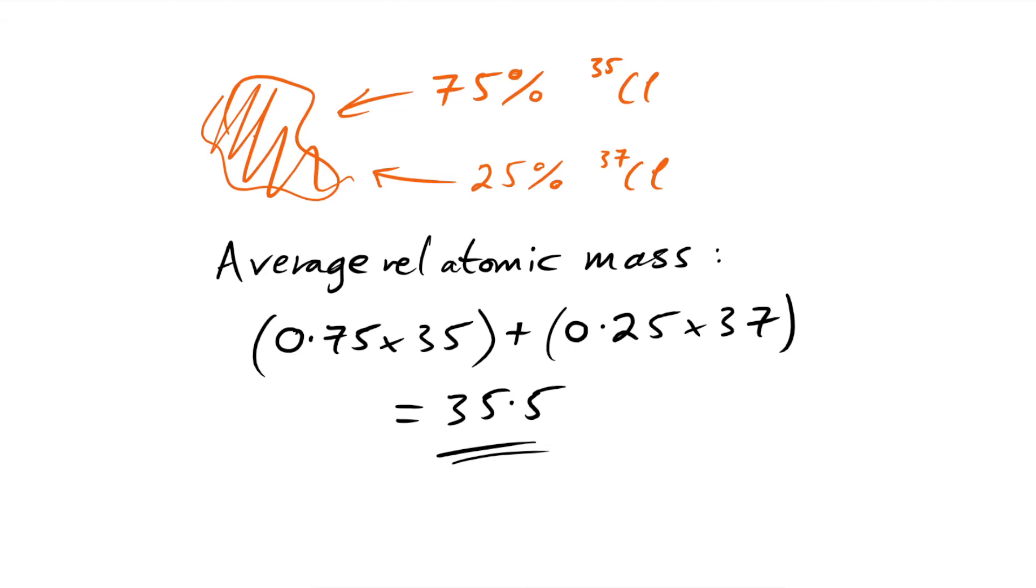Now you might be thinking, when it comes to finding out yields and how much things weigh in reactions, do we have to do 35 or 37? Well no, we just use 35.5. Because when you react chlorine, you're reacting millions and billions and trillions of these atoms. 75% are going to be chlorine-35, 25% are going to be chlorine-37. So we don't really care about the different isotopes, all we care about is what the average relative atomic mass is.